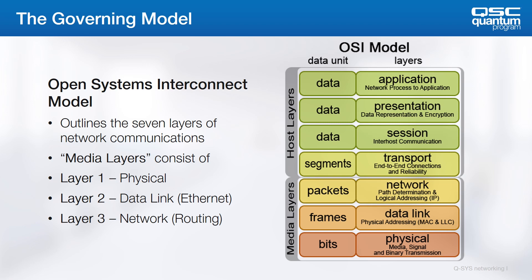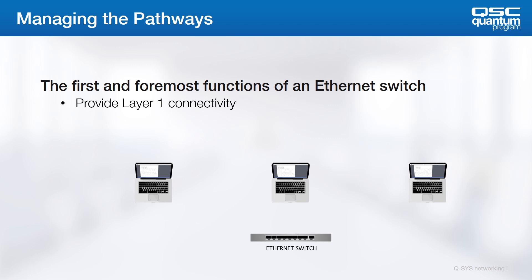The OSI model is made of seven layers. The lowest layers concern themselves with the basic means of connectivity — these are known as the Media layers. Layer 1 represents the actual physical connections. Layer 2, the Data Link layer, defines the framework for communication between devices. Layer 3 builds up to the routable, far-reaching ability to transmit a packet virtually anywhere. The Host layers — layers 4 through 7 — concern themselves with how machines deal with multiple services and applications, and how they're organized and interpreted.